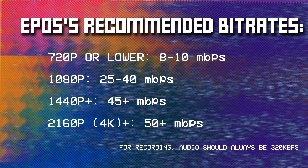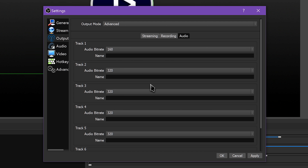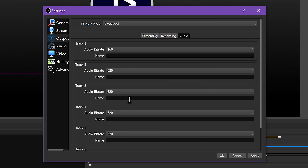At high bitrates like 4K, you absolutely should be using NVENC or AMD VCE hardware-based encoding instead of X264. If you're doing strictly a recording profile, all of your audio bitrates should be set to 320 kilobits per second. Having top quality audio is important, and there is no reason to record at a lower bitrate.